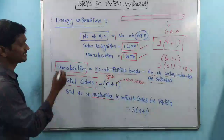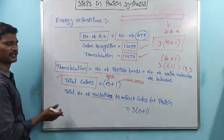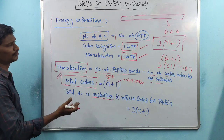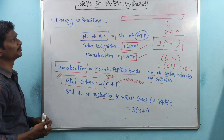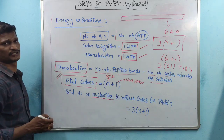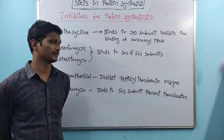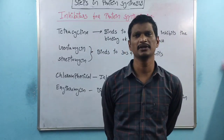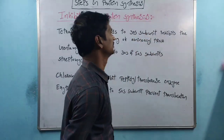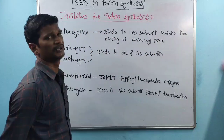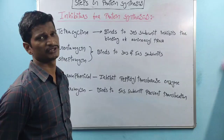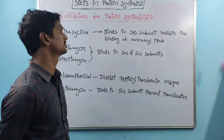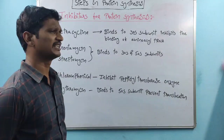That is about the energy expenditure and the formulas for counting codons and nucleotides in protein synthesis. Coming to the last topic: inhibitors of protein synthesis. Some chemical compounds have the capacity to inhibit protein synthesis, and these are called inhibitors.